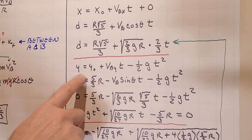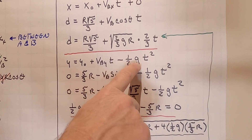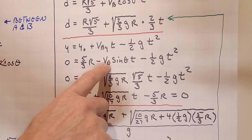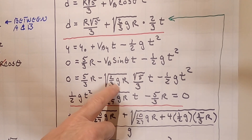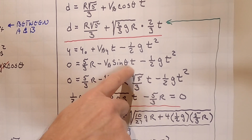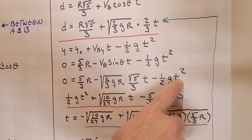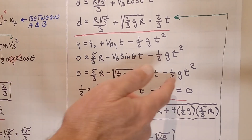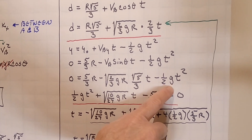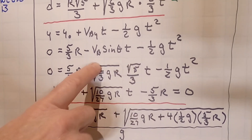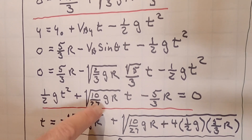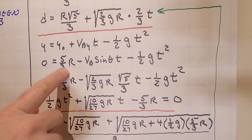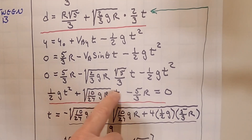The y equation is: y = y₀ + v_By · t − ½g·t². Here v_By = −v_B·sinθ. Setting y = 0 (ground level) and substituting the known values of v_B and sinθ, we get a quadratic in t. Rearranging into standard form: ½g·t² + (positive term)·t − (5/3)r = 0. We can combine the √5 and √2 factors as √10.